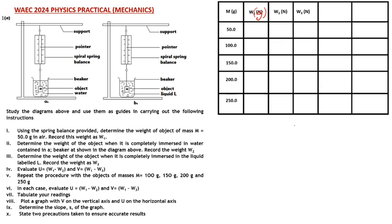I also have the weight in water, which I'll record in grams, and the weight in kerosene or liquid, also in grams. All of these should now be converted to grams. We also have V, which is W1 minus W2, also in grams. The masses recorded here will be the same as those recorded for weight in air.